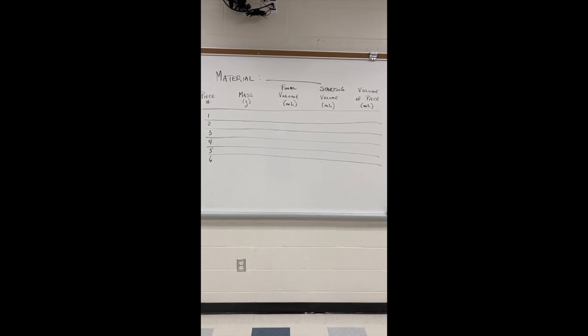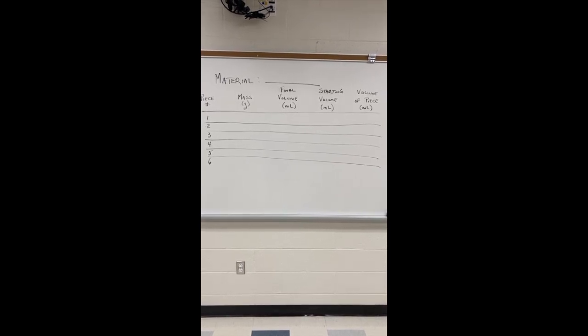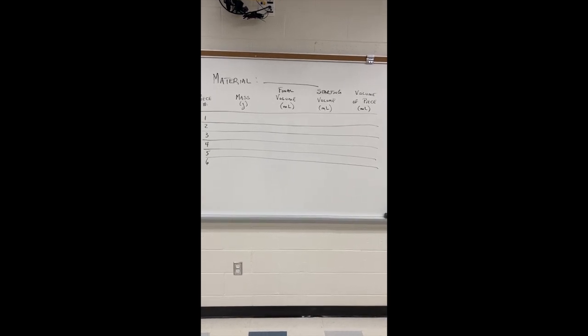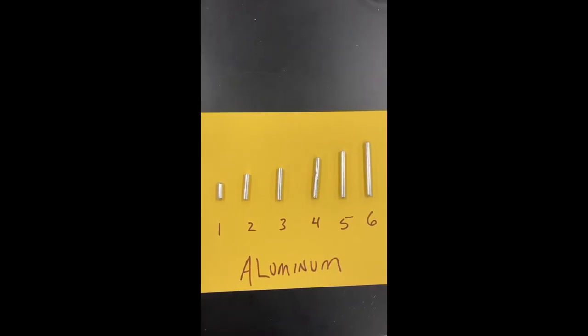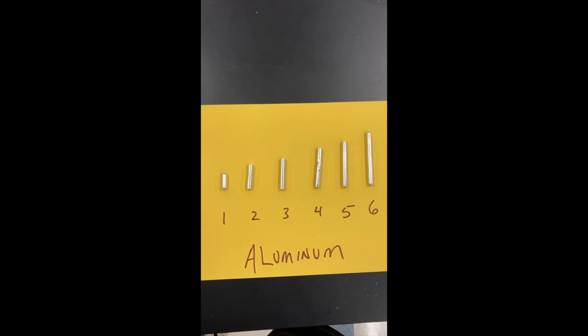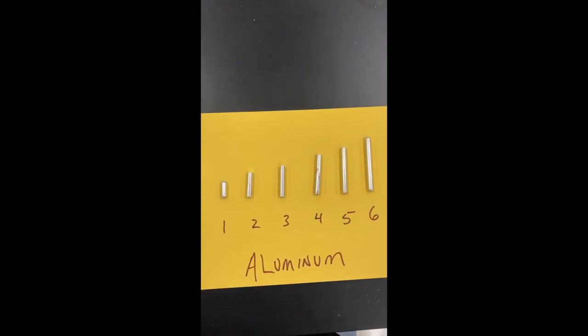Then we're going to subtract them to find the volume of each piece. In this lab we're going to find the density of some aluminum pieces. I've got six chunks of aluminum here, one being the smallest piece, and they each get gradually larger.